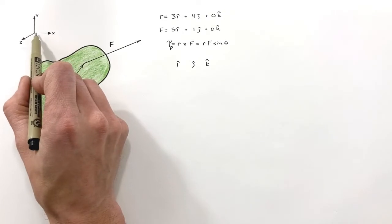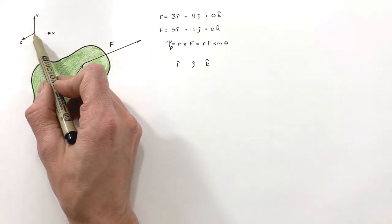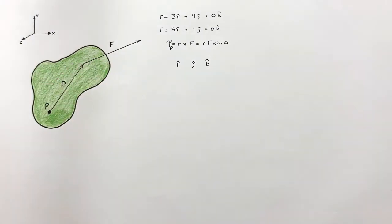Where i is in this positive horizontal direction, j is upward, and k, or in the z direction, is out of the page.